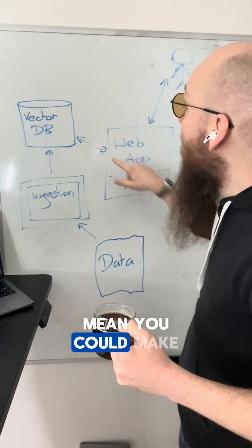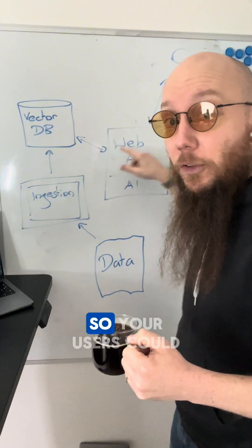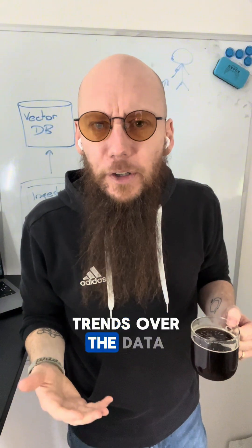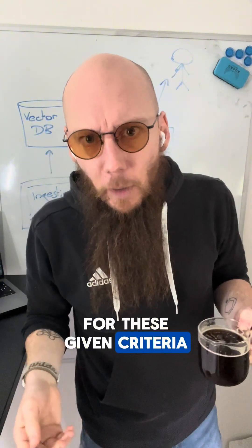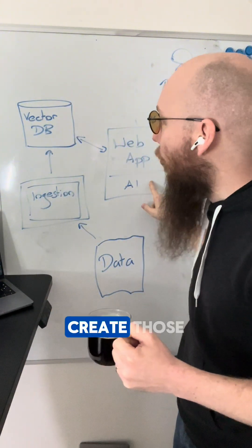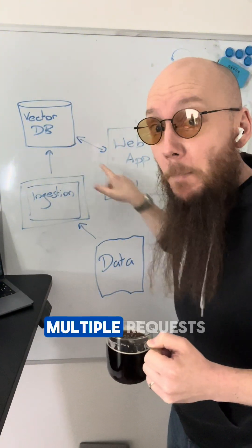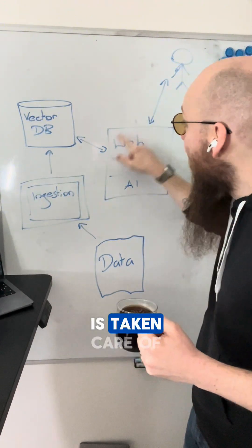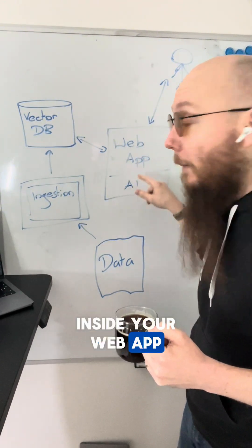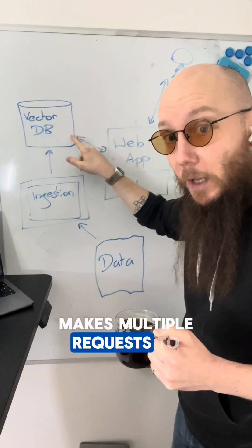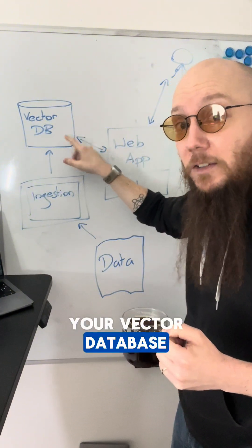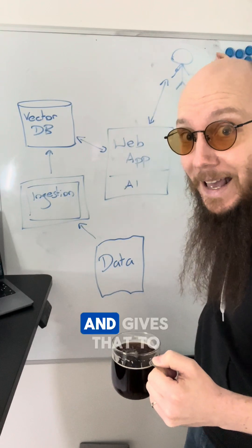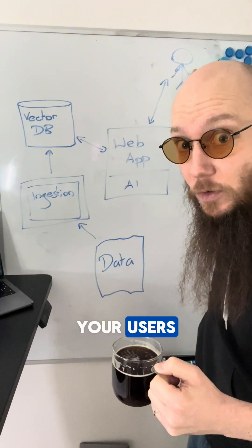By that I mean you could make multiple queries. Your users could come and say, 'What are the trends over the data for these given criteria?' And the logic to create those multiple requests to your vector database is taken care of inside your web app. It goes ahead and makes multiple requests to your vector database, gets out the data it needs, forms a meaningful response, and gives that to your users.